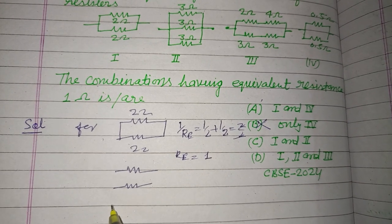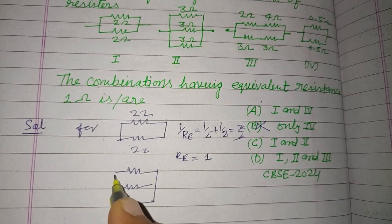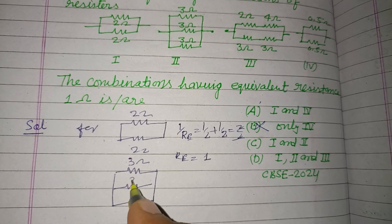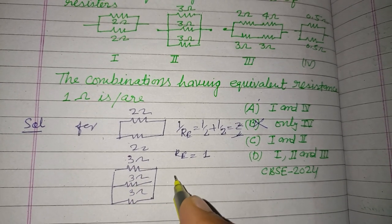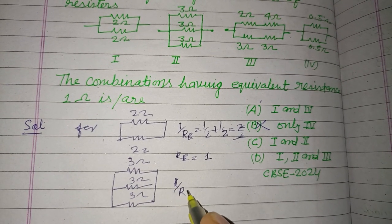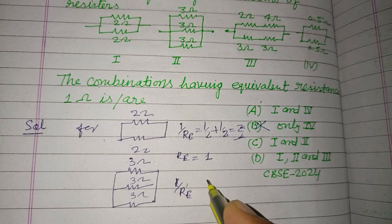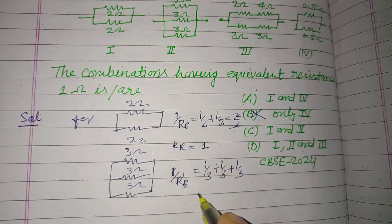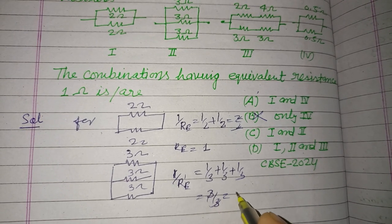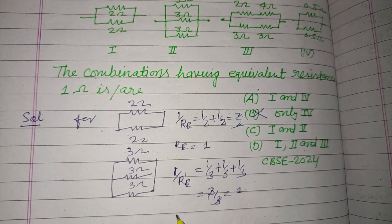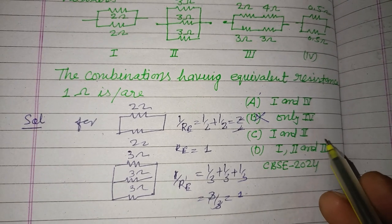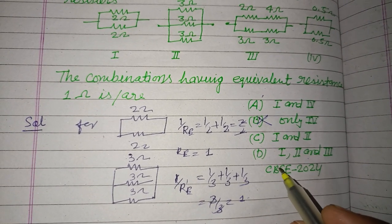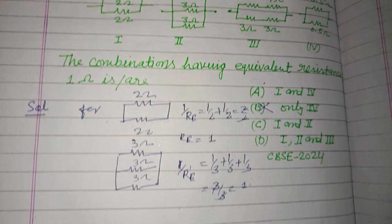Now second - here are three resistances which are in parallel combination, each is 3 omega. So 1/R_E equals 1/3 plus 1/3 plus 1/3, so this is 3/3 which is 1. So R is also 1, so here second is also correct. So first and second.